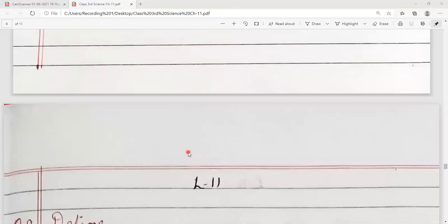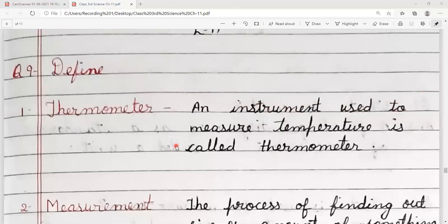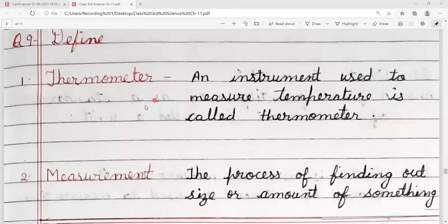Next question is define question number 9, define thermometer. Definition of thermometer. An instrument used to measure temperature is called thermometer.